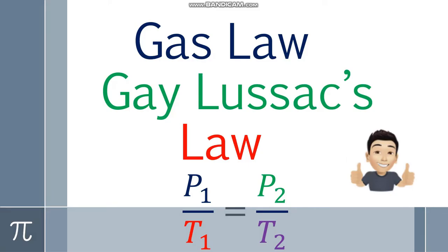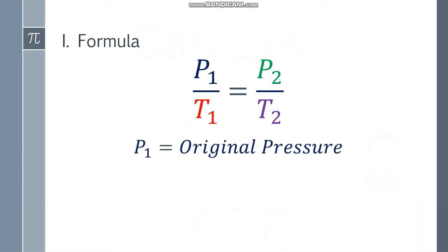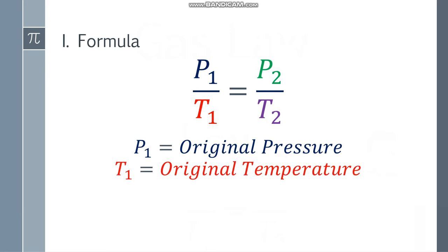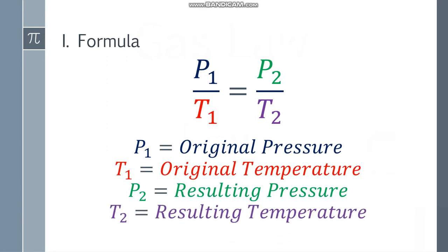Welcome back to my channel, Math and Language, and we're going to discuss Gas Law — Gay-Lussac's Law. Let's start with the formula. We have P1 over T1 is equal to P2 over T2. P1 represents the original pressure, T1 is the original temperature, P2 is the resulting pressure, and T2 is the resulting temperature.